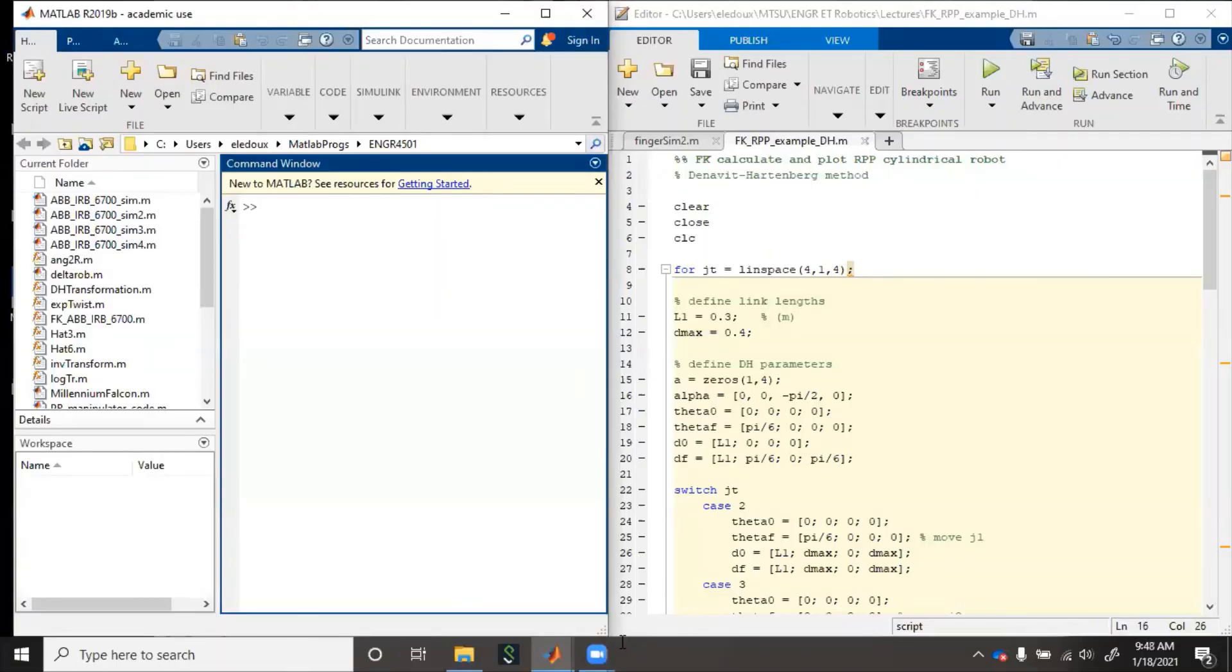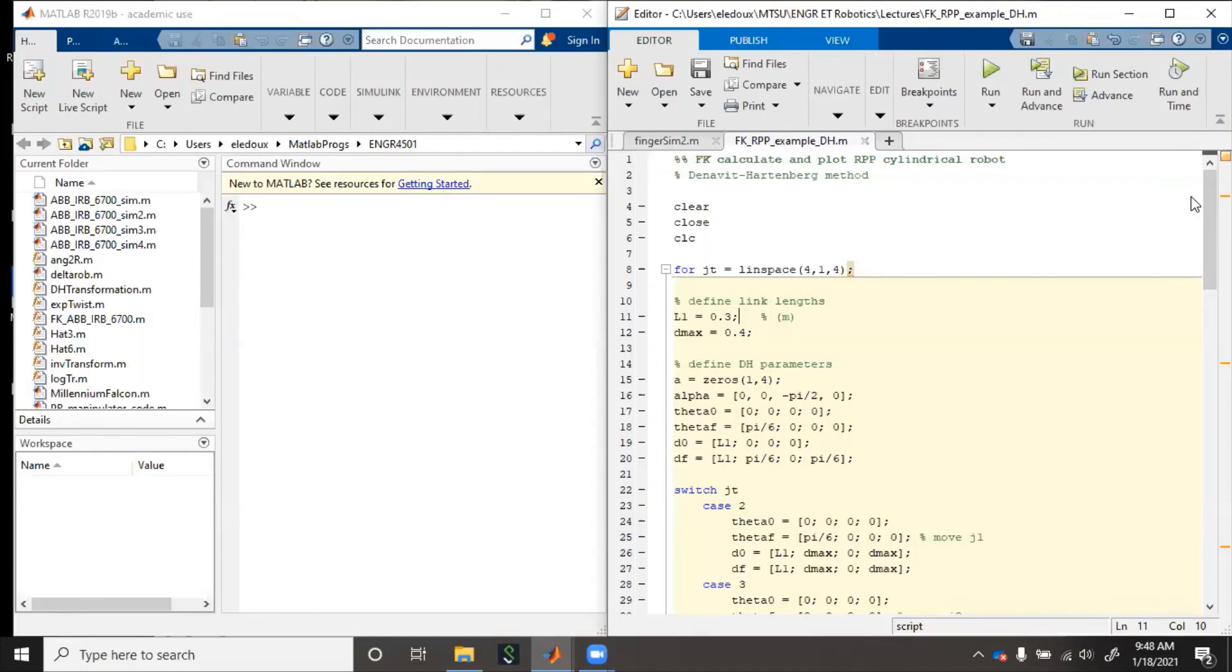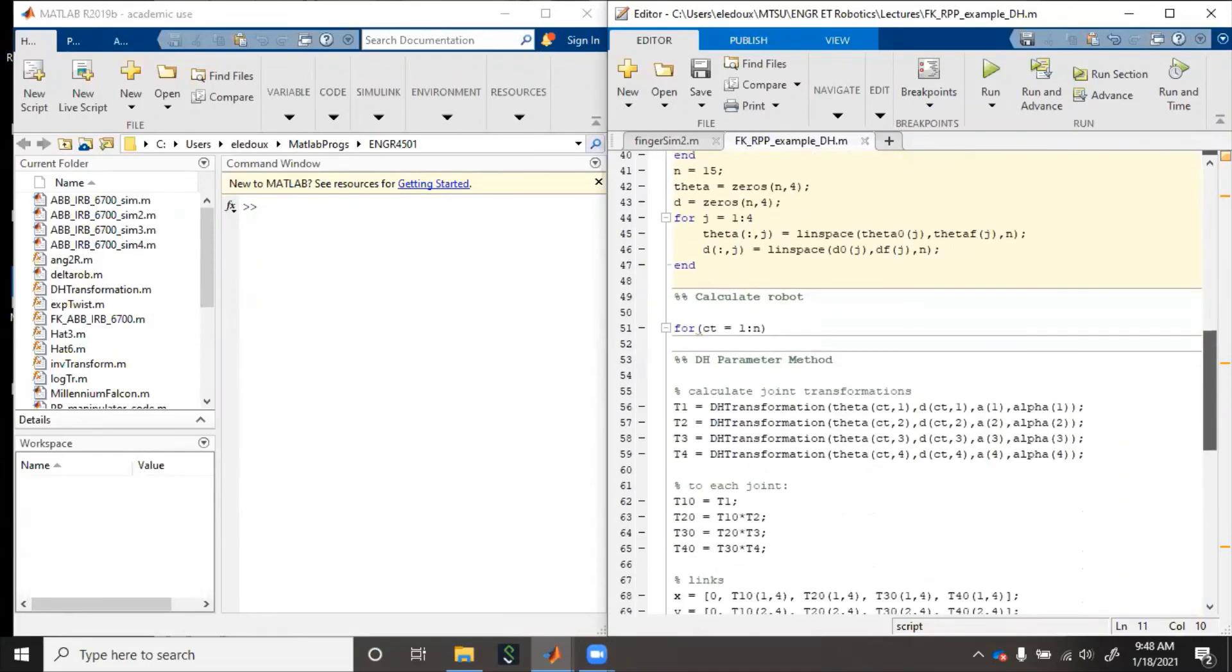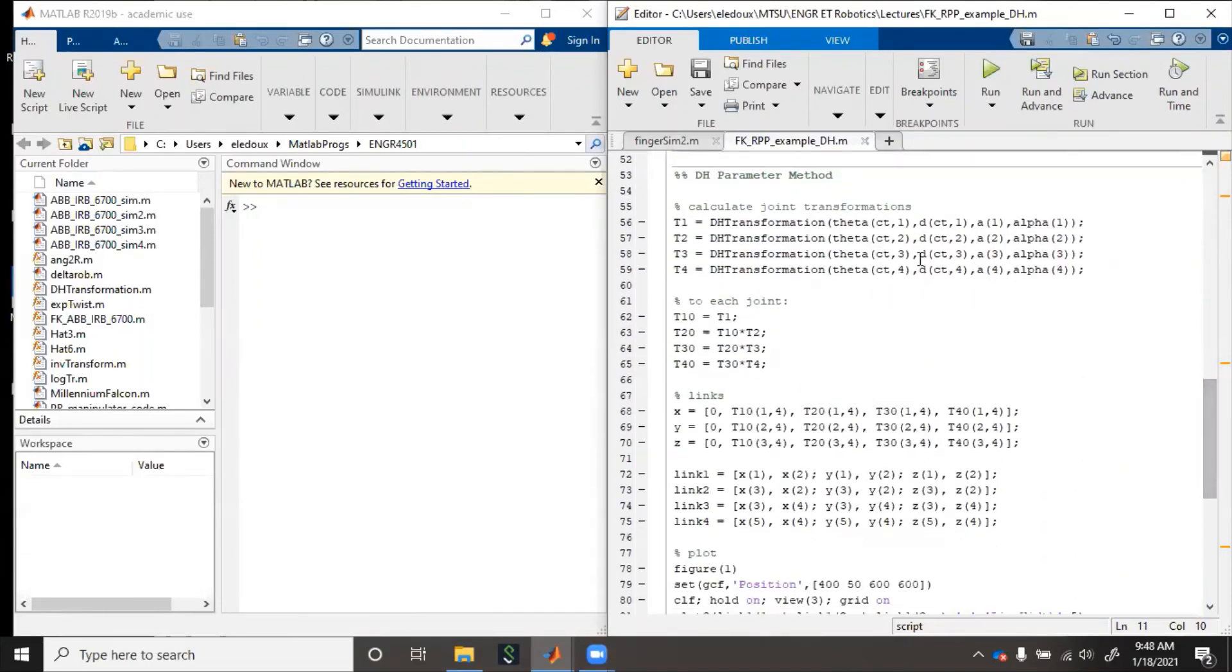Here's a MATLAB simulation to help with visualization. So this is pretty straightforward, just basically plugging in the parameters from the table. So you see here, finding the constants, so L1, and then finally the DH parameters. For the joints that change, which is theta and d, we have initial and final. And then down here, we just calculate the joint transformations, the links, and then finally plot. So let's run it.